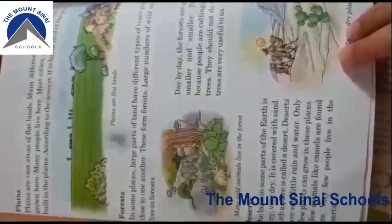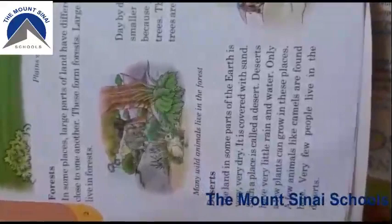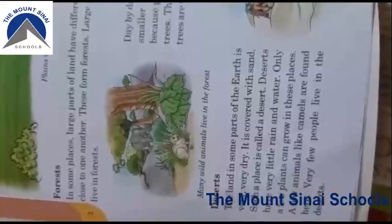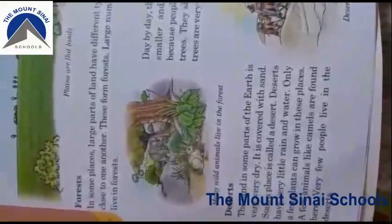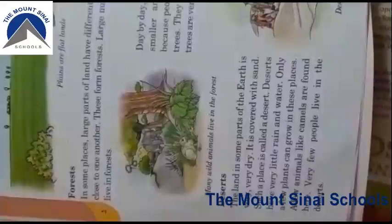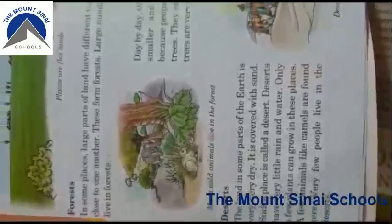The next one is about the deserts. The land in some parts of the earth is very, very dry. These very dry and sandy places are called deserts. Many people don't live in the deserts because there is very little water and little rain. Camels are found in deserts because camels can live without food and without drinking water for many days — even seven days. Animals found in deserts include snakes and camels. Very few people live there, and the cactus plant is what we mostly see in the deserts.